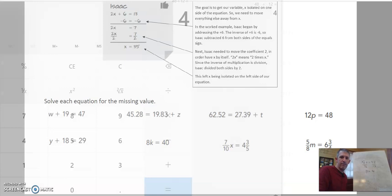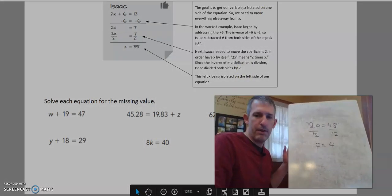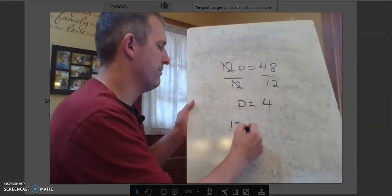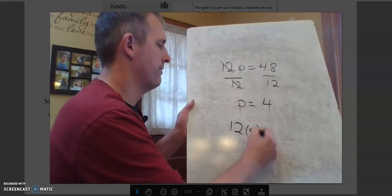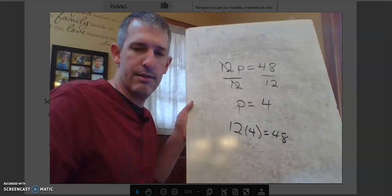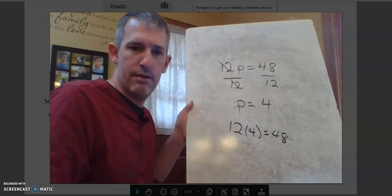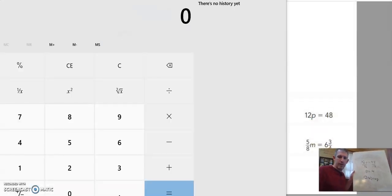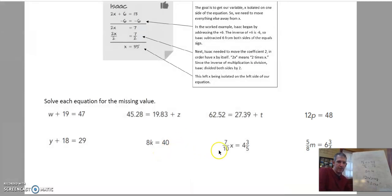And again, I can check this to see if I'm right by putting it back in. So if I do 12p, or a 4 in this case, I get 48. So 12 times 4, does that give me 48? 12 times 4 does give me 48. So I know that I have it right. Let's look at one of these with the fractions. They're a little bit tricky.